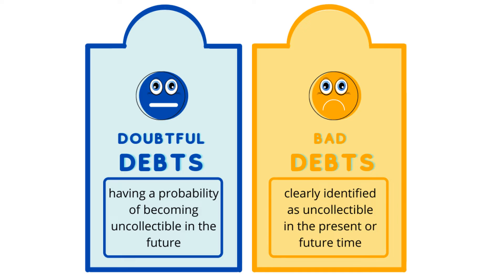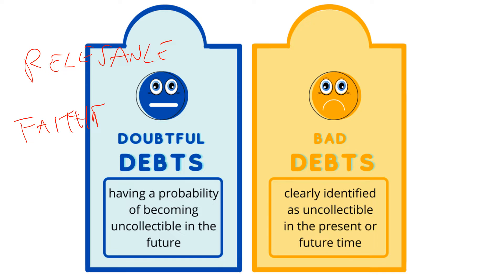Now if we waited until we had confirmation that the customer was indeed bankrupt or insolvent — which would be the point where we could record the debt as bad — we could potentially be waiting for years. And if that was the case, we'd be breaching a couple of qualitative characteristics. Our reports would fail to provide all of the relevant information and thus would not be faithfully representing the full amount owing from our accounts receivable. But this is where allowance for doubtful debts comes into play to satisfy these QCs.